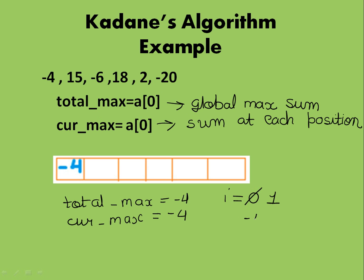So I have minus 4 and 15. Now you tell me, current_max is minus 4, and if I add 15 to it, I will get 11. So is 11 the maximum sum till here? No.